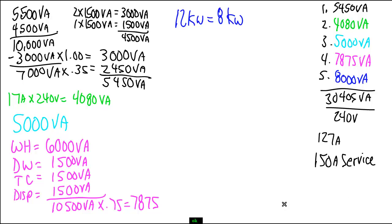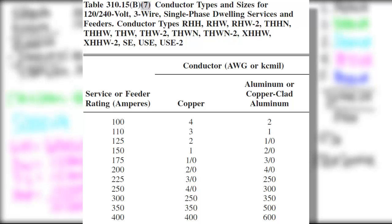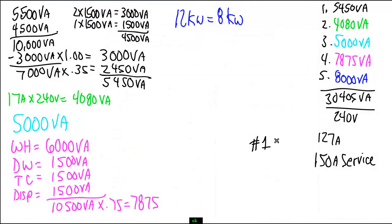Well, what size of service feeder would I need to be using? What you need to do to find that out, because we're in a dwelling unit, and these rules only apply for dwelling units, you can use table 310.15B7, which is only for 120, 240 volt, three wire, single phase dwelling services. When I go down to the column that says 150 amps, and I go over to the column for copper, I need a number one copper conductor for this service.